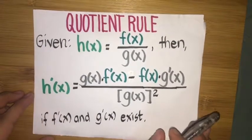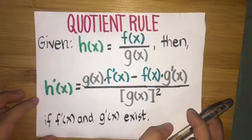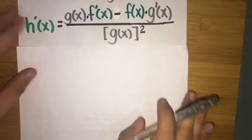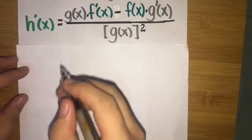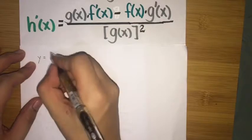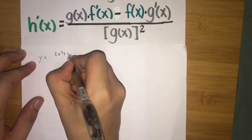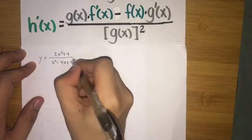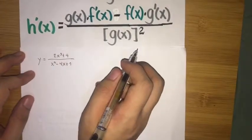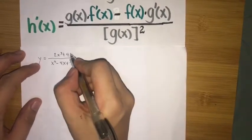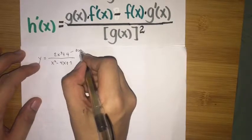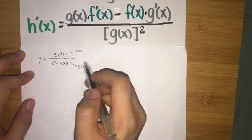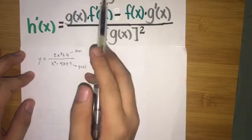Let's try some examples on how we can apply the quotient rule in finding the derivatives of functions. For the first one, we have y equal to 2x cubed plus 4 over x squared minus 4x plus 1. This is an example of the quotient of two different functions. We can let the numerator be f of x and the denominator be g of x, giving us f of x over g of x.